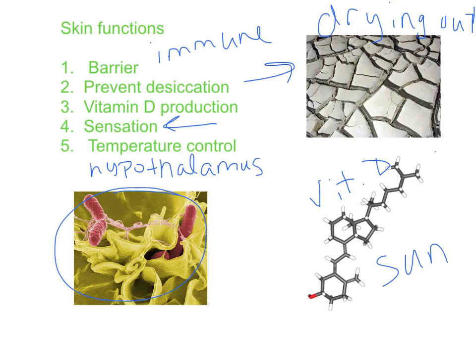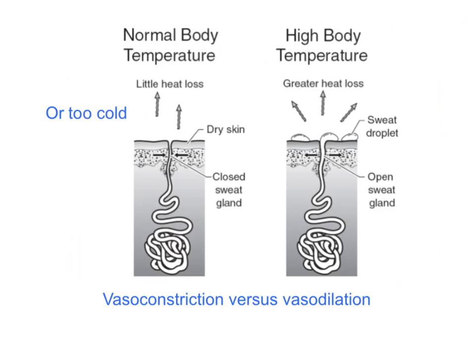When the hypothalamus in the brain reads the body temperature, it sends signals to the skin to help change the body temperature. One of the most common ways is with sweat. If our body temperature is too high, we start producing sweat. Sweat is mostly made of water, and as it evaporates, it removes heat from the body, since water is very good at retaining heat. As that water evaporates into the air, it takes the heat with it.